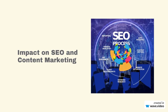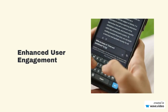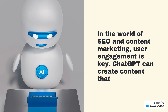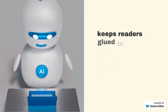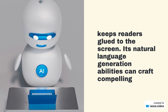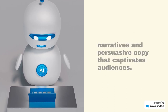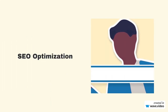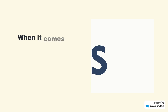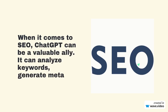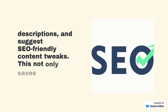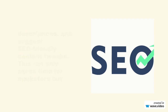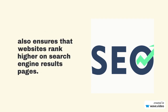Impact on SEO and content marketing. Enhanced user engagement: in the world of SEO and content marketing, user engagement is key. ChatGPT can create content that keeps readers glued to the screen. Its natural language generation abilities can craft compelling narratives and persuasive copy that captivates audiences. When it comes to SEO, ChatGPT can be a valuable ally — it can analyze keywords, generate meta descriptions, and suggest SEO-friendly content tweaks, ensuring that websites rank higher on search engine results pages.